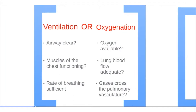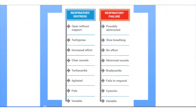Is it respiratory distress or respiratory failure? In respiratory distress, the airway is open without support, with normocapnia and increased effort, clear sounds, tachycardia, agitation, and pale or variable appearance. In respiratory failure, the airway is possibly obstructed, there may be slow or absent breathing effort, abnormal sounds, bradycardia, no response, and the victim could be cyanotic.